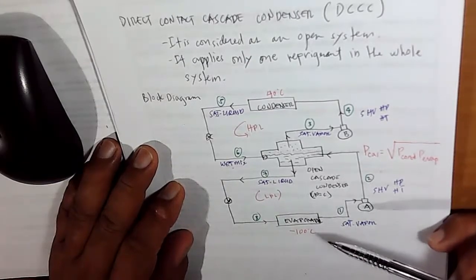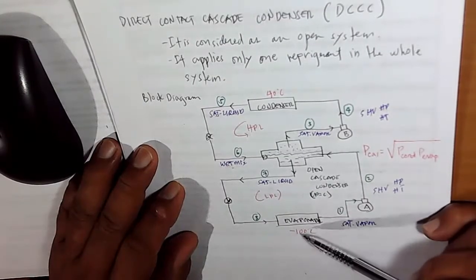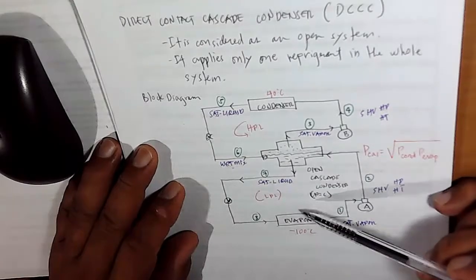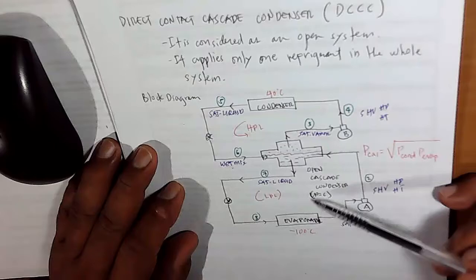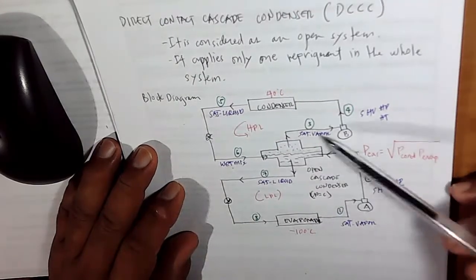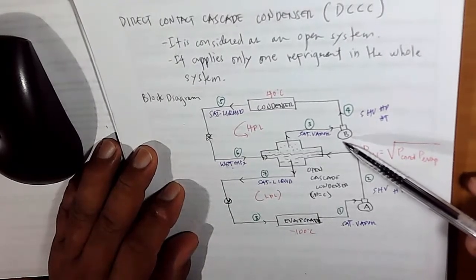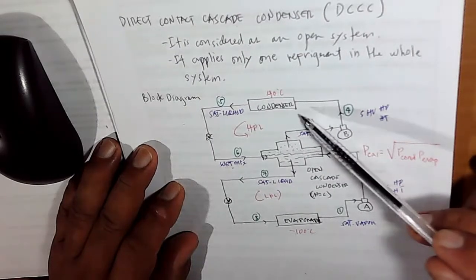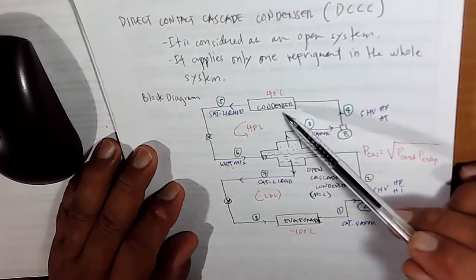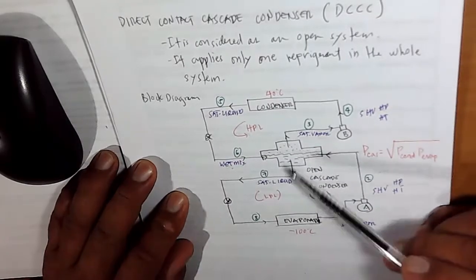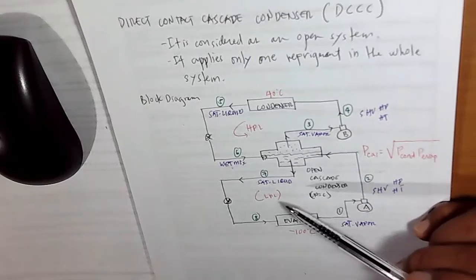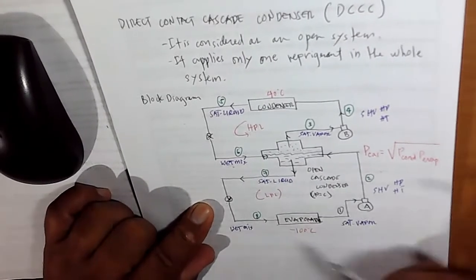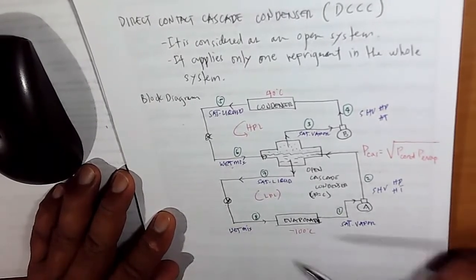There is an exchange of heat from the very low temperature of negative 100 degrees Celsius going up to 40 degrees. The heat coming from the very low temperature will be stored in your cascade condenser before going to the compressor, which will later convert both mass and heat from the cascade condenser into superheated vapor at high pressure and temperature, before it goes to your condenser. At point 7, it is once again converted to saturated liquid, passing through your expansion device at constant entropy, thereby changing once again into a wet mixture before going to your evaporator, and then your cycle continues.